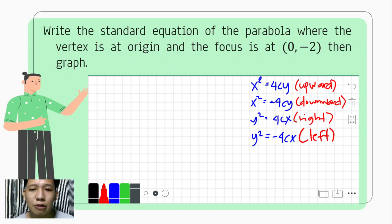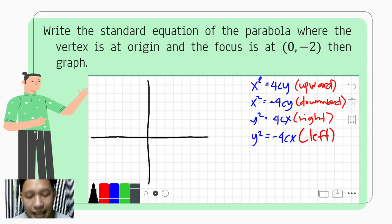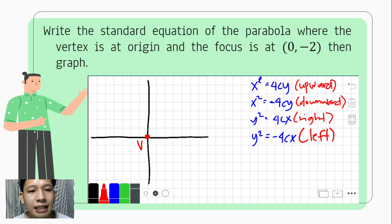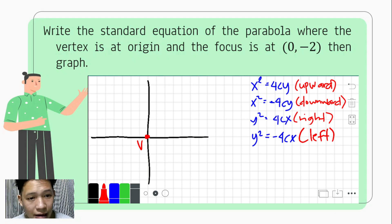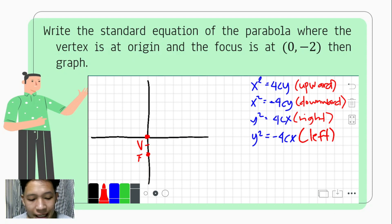To have our standard equation of the parabola, it would really help us to graph first or locate our given on the Cartesian coordinate system. The vertex is at the origin, and the focus is at (0, negative 2) — that is x=0, y=negative 2. So the focus is here. Since the focus is below the vertex, we have an idea that the parabola opens downward.